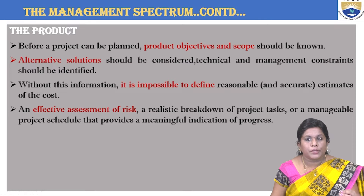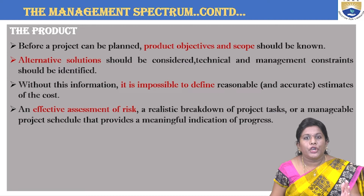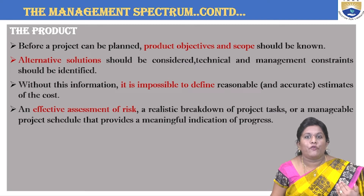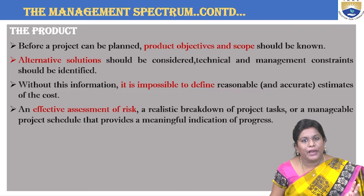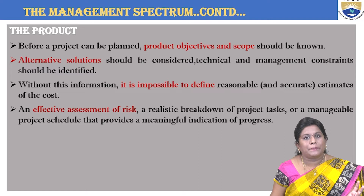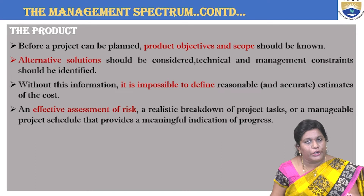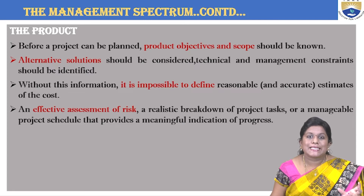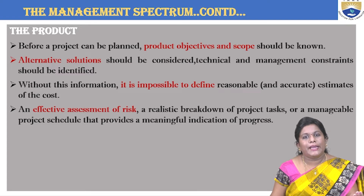Without all this information, it is impossible to reasonably estimate the cost. If you are trying to define some modules, once the modules are defined, check whether you have proper solutions and also put some alternative solutions so you can estimate the cost. Once all this is done, an assessment of risk also has to be focused on. So the four main things of the product are: product objectives and scope, alternate solutions, cost estimation, and risk assessment.